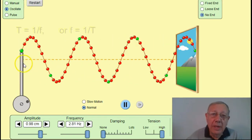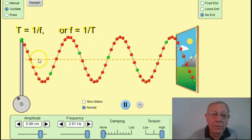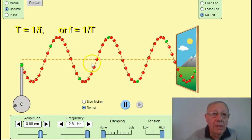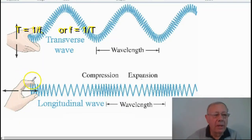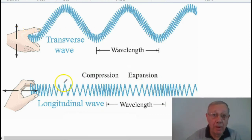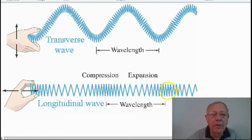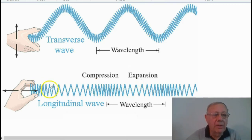We can also apply these same features of waves to compression waves. Here you can see a compression wave, or longitudinal wave, and the same features apply. We've got a wavelength — marked here from the center of one compression to the matching position on the next wave. Similarly, one wavelength could be the distance from the center of one rarefaction to the corresponding rarefaction on the next wave.